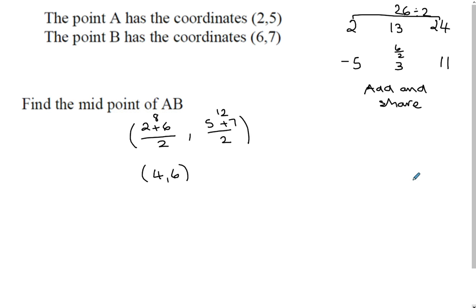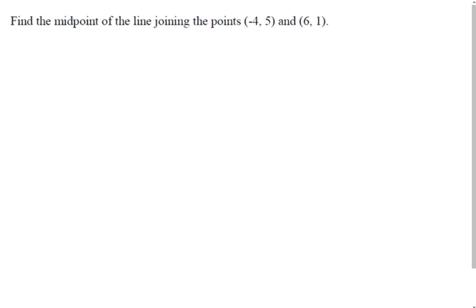Let's have a look at another one. Find the midpoint of the line joining the points minus 4, 5, and 6, 1. So again, let's add our x coordinates, minus 4 plus 6, divided by 2, and 5 plus 1, divided by 2. So then it comes out as minus 4 plus 6 is 2, 2 divided by 2 is 1, and 5 plus 1 is 6, 6 divided by 2 is 3. And that's how it flows.